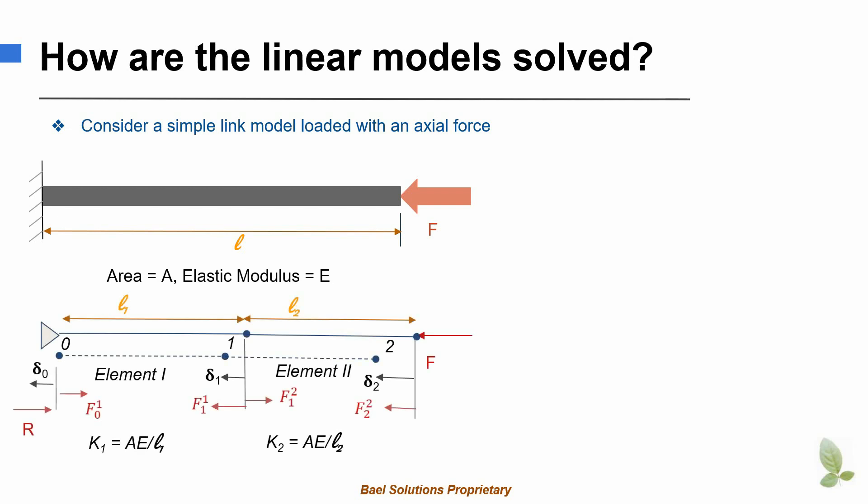We can represent this bar in a finite element model using simple link elements. Consider two link elements created between three nodes — node 0, node 1, and node 2 — representing the bar. Node 0 is the fixed end, node 1 is the intermediate node connecting the two link elements, and node 2 is the free end of the bar.